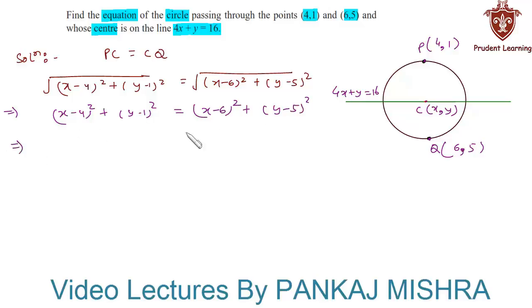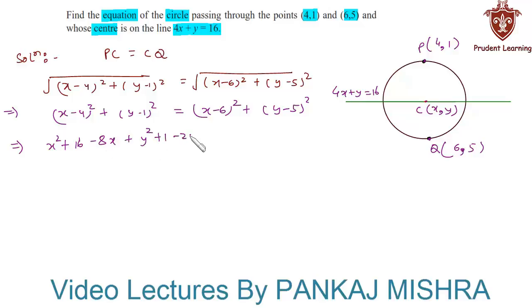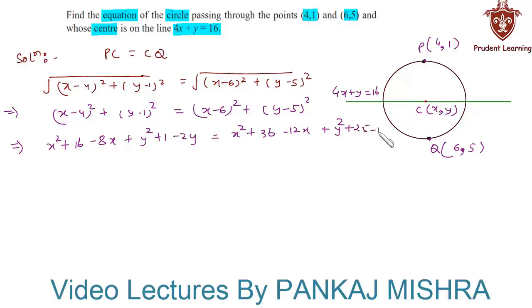Expanding each of the terms, we have x² plus 16 minus 8x plus y² plus 1 minus 2y equals x² plus 36 minus 12x plus y² plus 25 minus 10y.